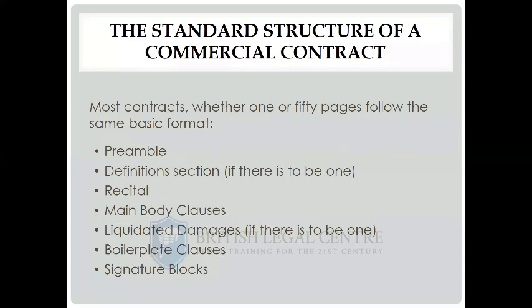Now let's look at the structure of a contract. Most contracts - whether they're two or three pages, 50 pages or 500 pages, whether written in Chinese, French, English, German, or Portuguese - they're going to have the same structure. Every commercial contract tends to have the same structure. First, there is a preamble - this is where you introduce the parties, name them and give their addresses. Then you have a definition section if you've got more than five words that need defining with special meanings in the contract. And then you come to the recital.